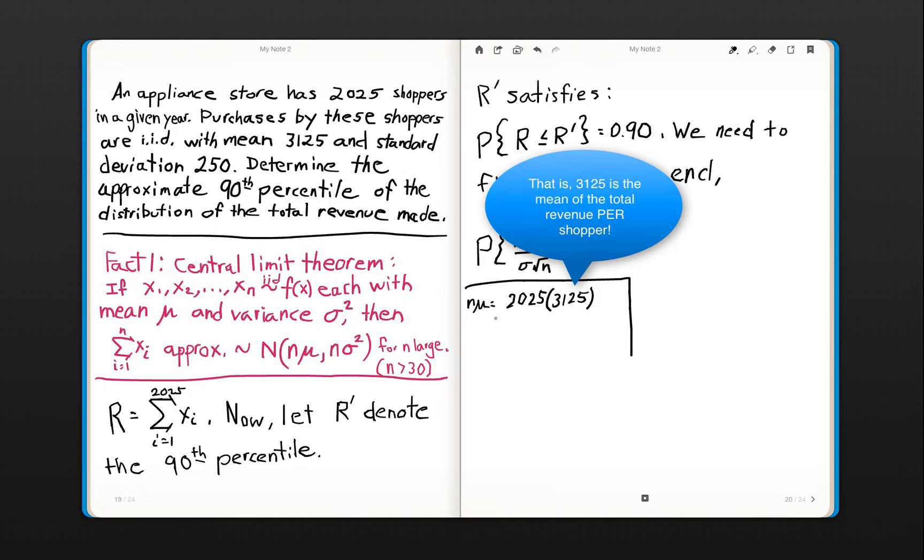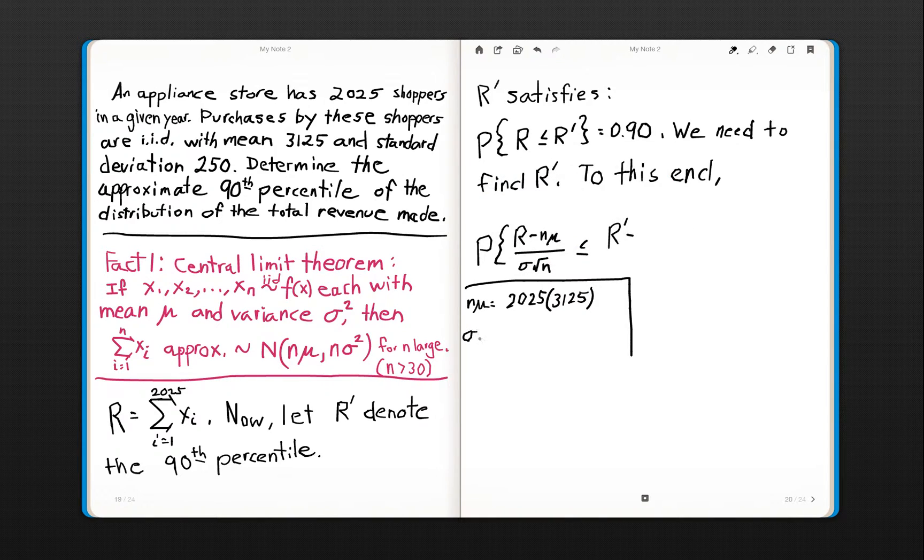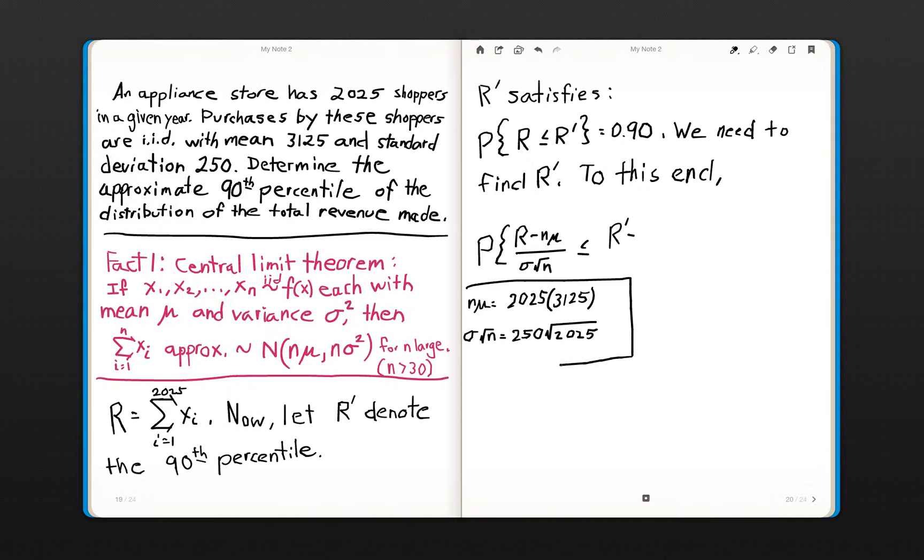And σ times the square root of n, that's its standard deviation, is going to equal 250 times the square root of n. So that's a little scratch work and a description of where these numbers come from. I'm going to transcribe what we have here. I won't actually work out the arithmetic, I'll leave it in the form as it's given.